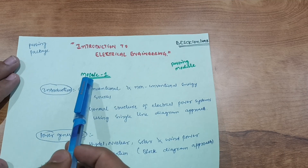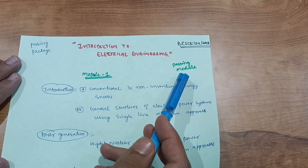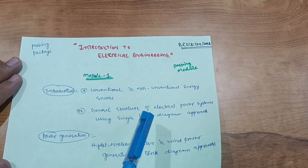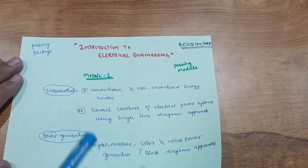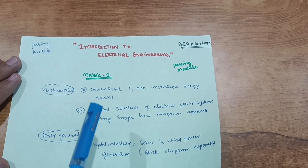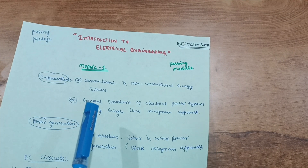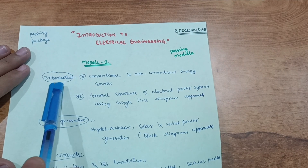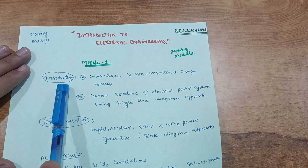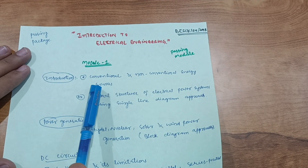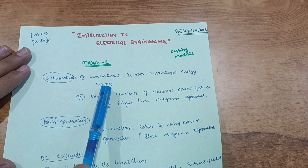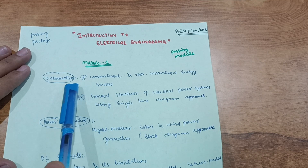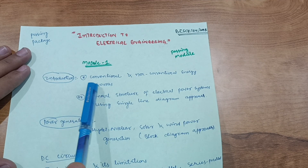Module 1 is the passing module. It is a theoretical module with a little bit of problems, but the majority of the portion is theory. The introduction part you have to cover as per the syllabus — there are three chapters. The first part is the introduction part.